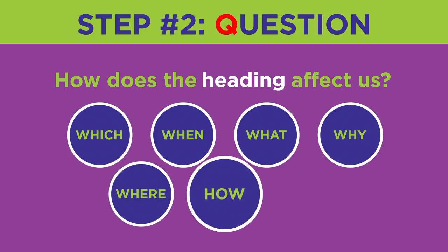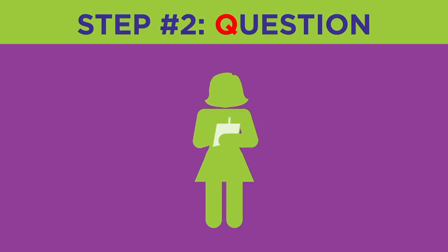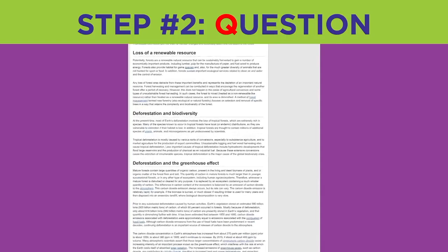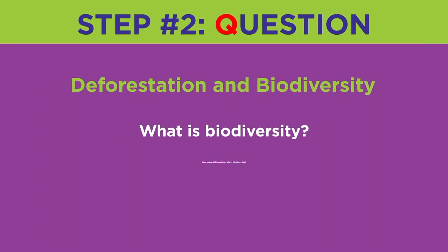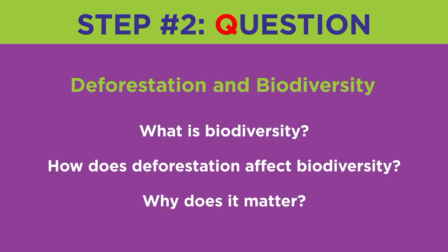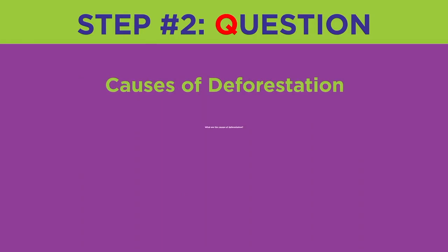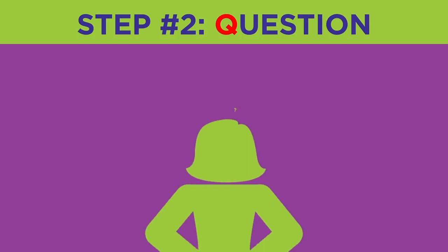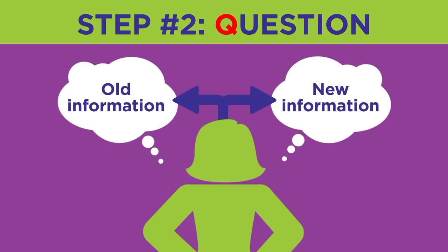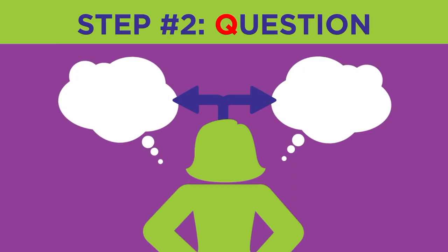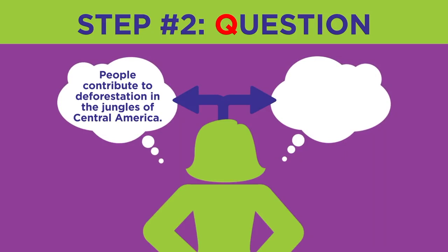One of the headings in the article about deforestation is 'deforestation and biodiversity.' After reading the heading, you might have these questions: What is biodiversity? How does deforestation affect biodiversity? Why does it matter? From the heading 'causes of deforestation,' you might wonder: what are the causes of deforestation? Also, ask yourself what you already know about those topics. Even if you don't know much, this helps your brain associate the new information with old information and it becomes easier to remember. For example, you may already know that people are contributing to deforestation in the jungles of Central America, and you may wonder why they're cutting down the trees. Now you know what to watch for and focus on as you read.